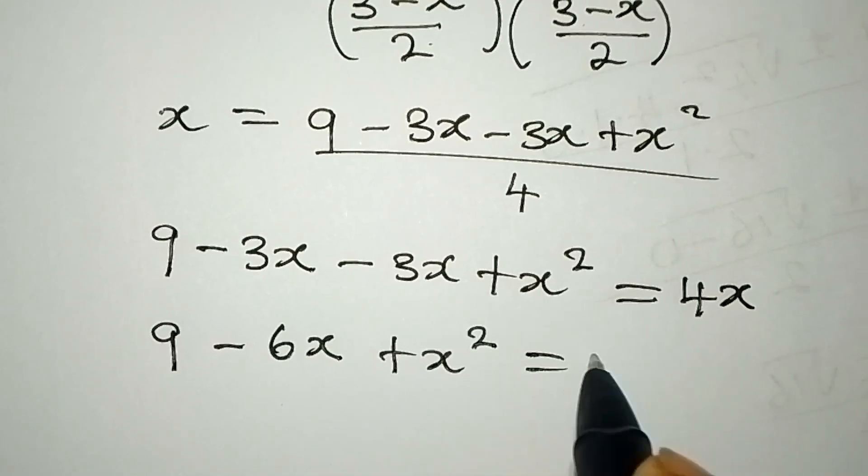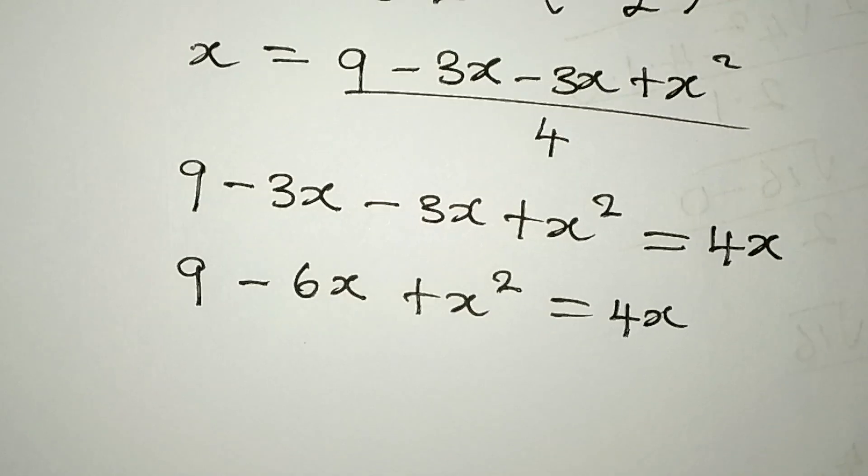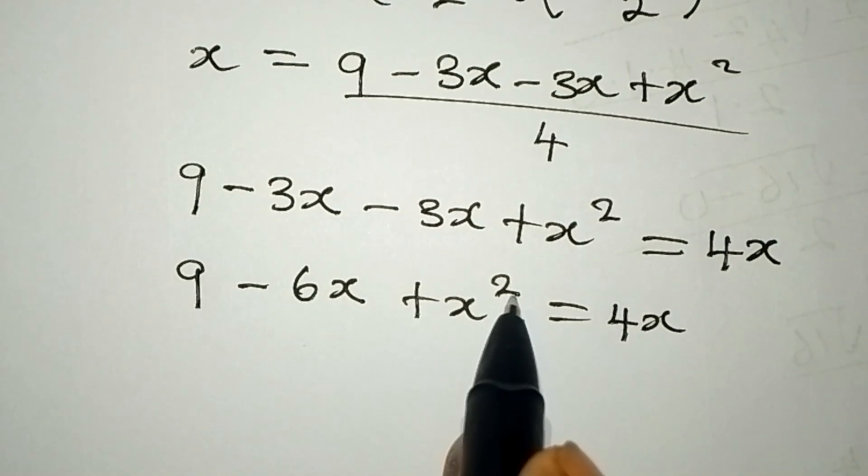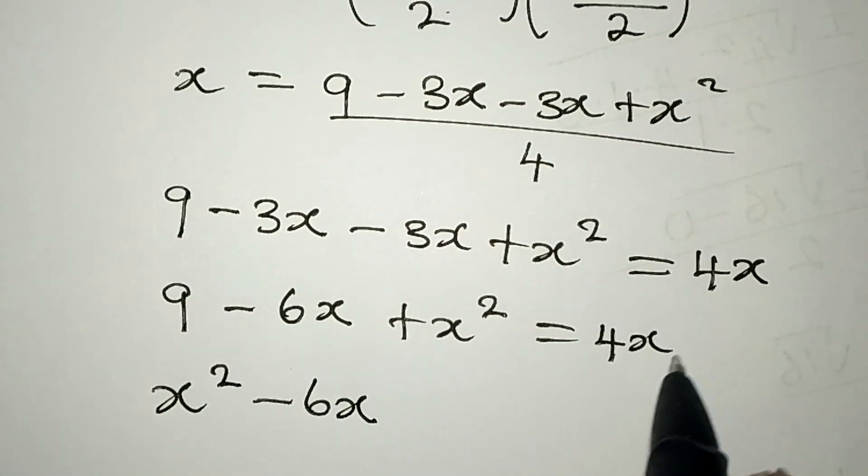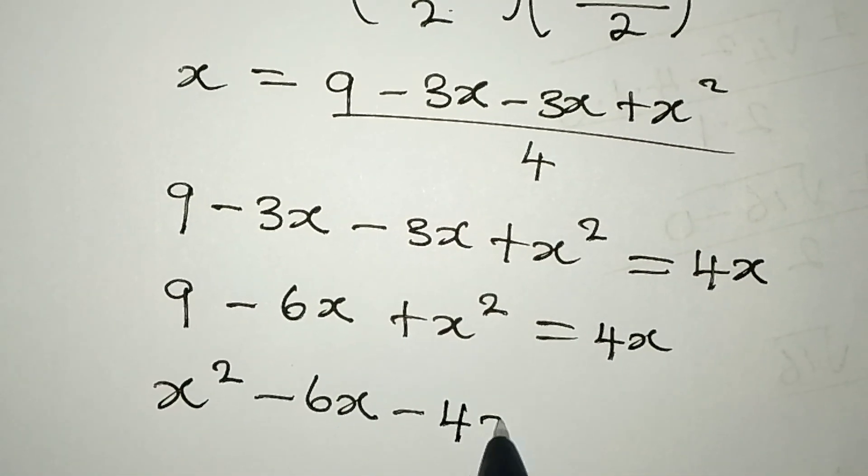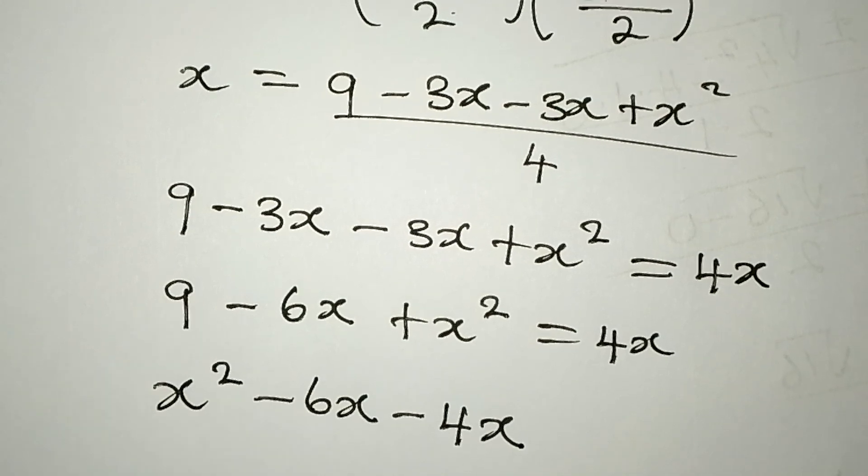= 4x. Now let's arrange this in standard form. x² - 6x, and the 4x comes over to become -4x, then we have +9.